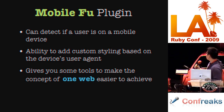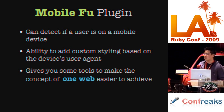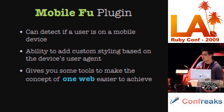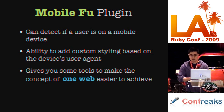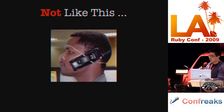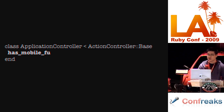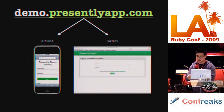Here's a gem called MobileFu. It can detect users on a mobile device, gives you the ability to add custom styling based on the actual device (not just the user agent), and provides tools to make the concept of OneWeb a lot easier to tackle. It's really simple — all you have to do is add `has_mobile_fu` to your application controller, just that one line, and you're started.